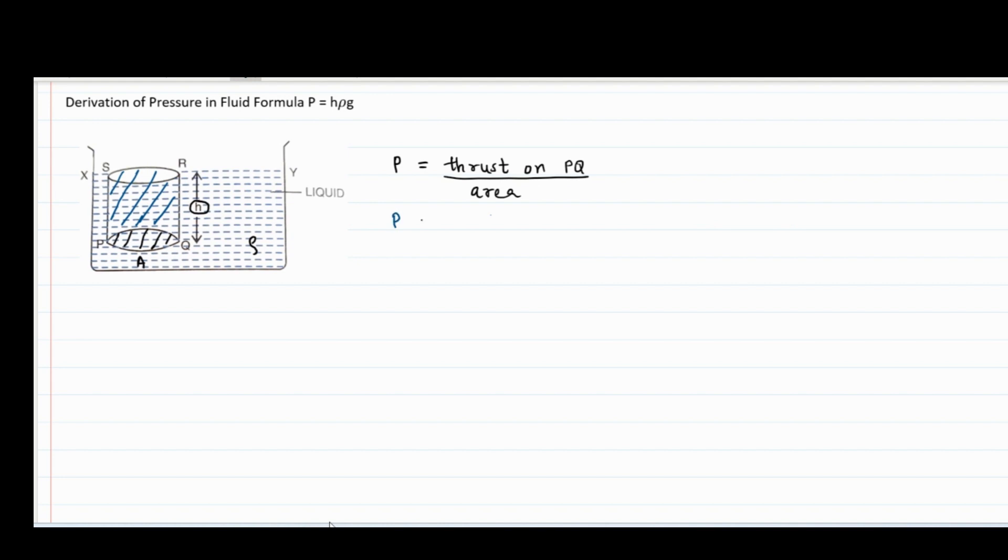So we can say pressure P is equal to weight of liquid column PQRS upon area. Weight can be written as mass into acceleration due to gravity, and area is A. So pressure becomes mg upon A.